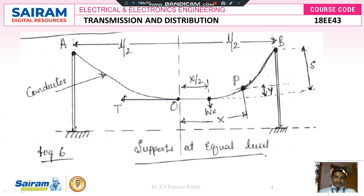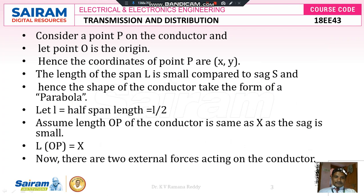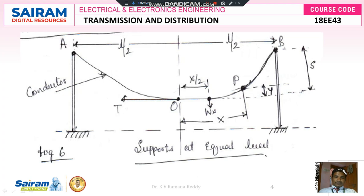The coordinates of point P are (x, y), where x is on the x-axis and y is on the y-axis. The length of span L is small compared to sag S, and hence the shape of the conductor takes the form of a parabola. Assume that the length OP of the conductor is the same as x, since the sag is small.